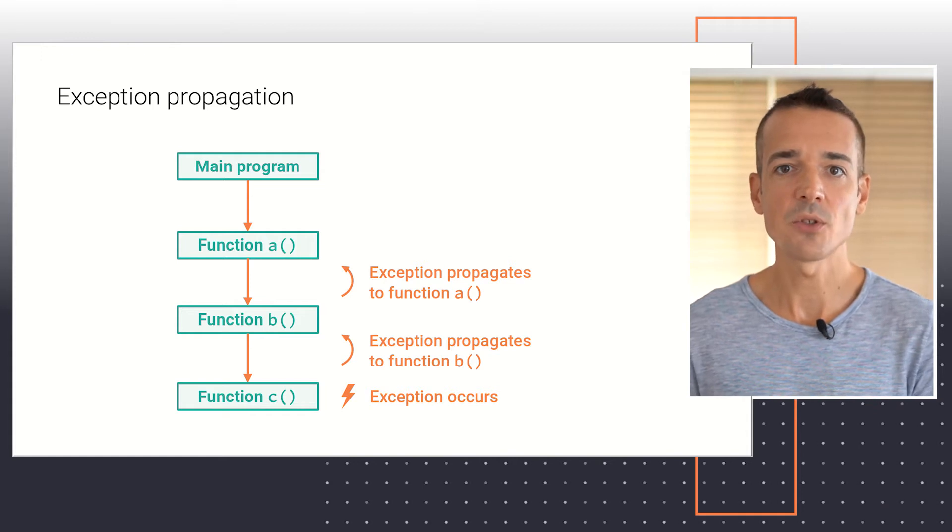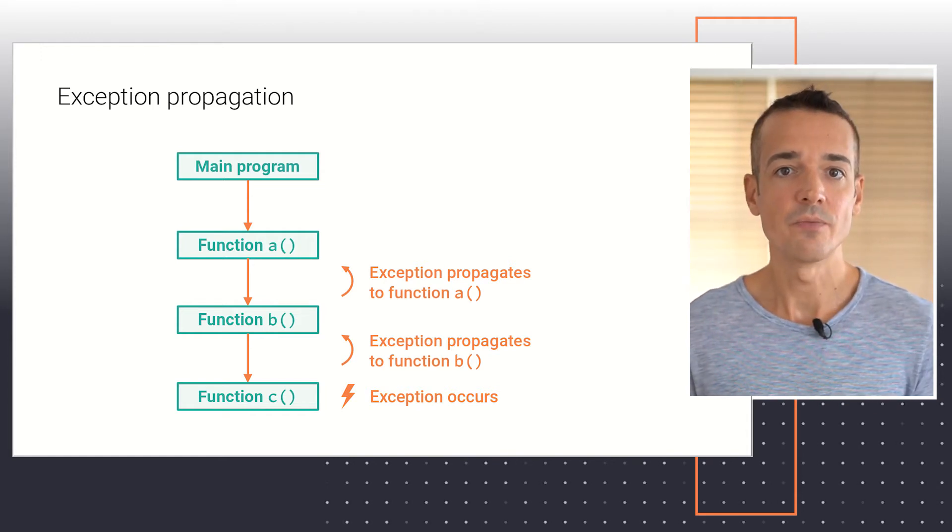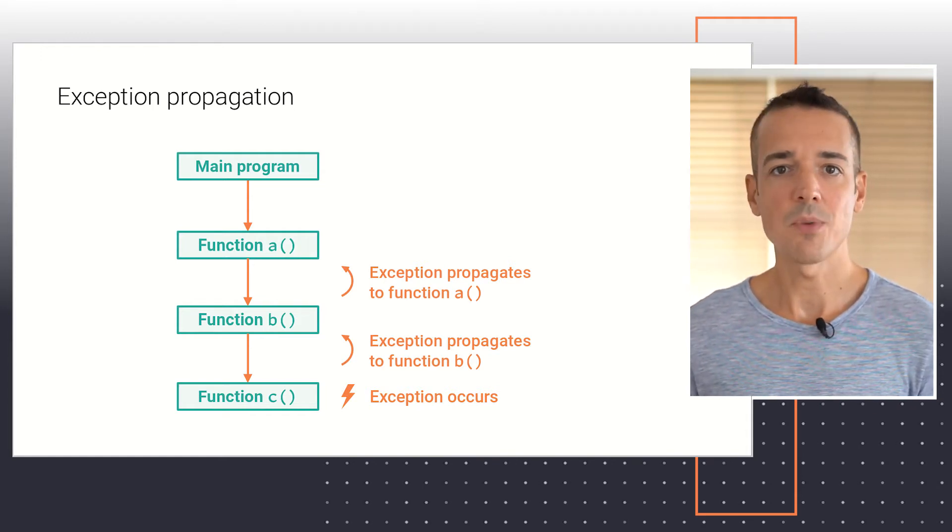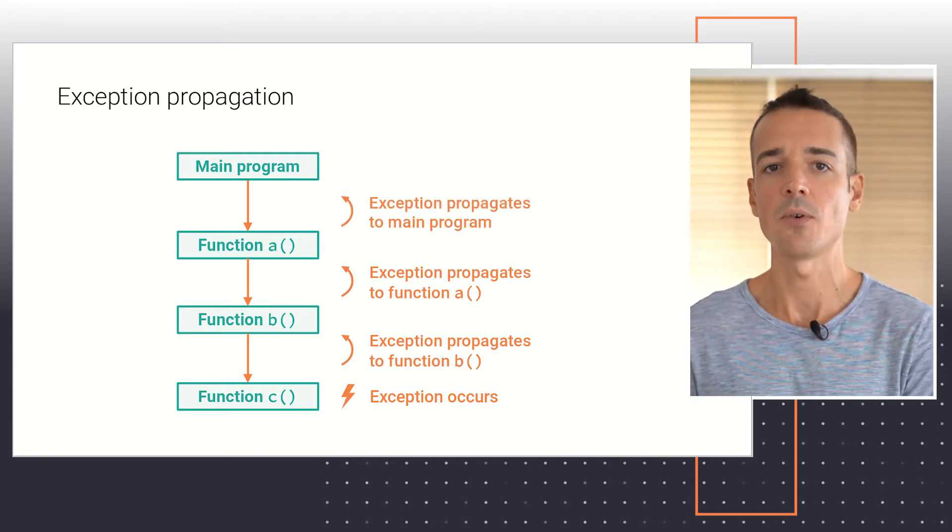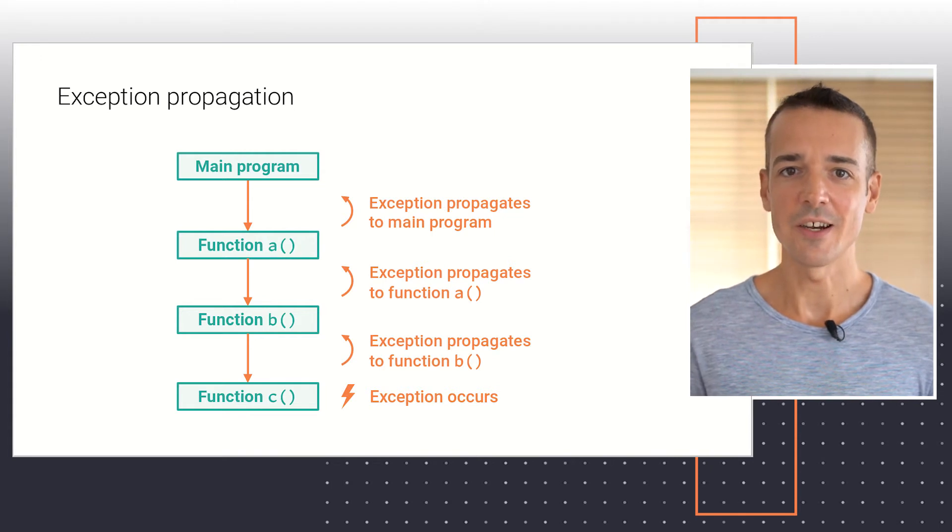Once again, function A has the option to capture it or let it go. In the absence of a try-except block within function A, the exception will continue to propagate to the main program. And this is our last chance to handle the error.